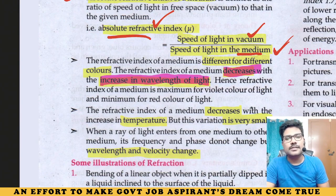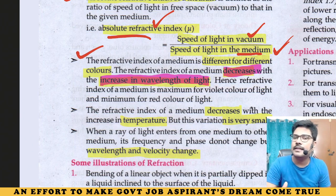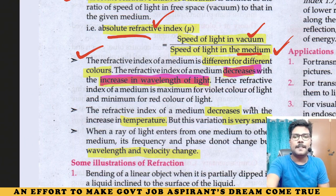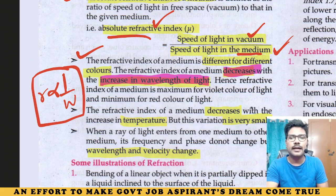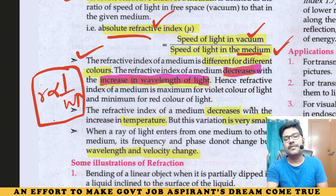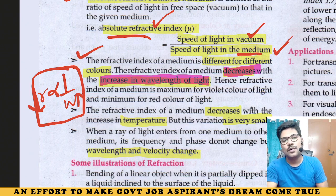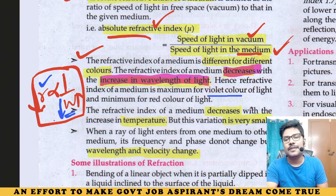Refractive index of a medium is different for different colors. Refractive index is inversely proportional to wavelength. When wavelength increases, refractive index decreases. Violet has minimum wavelength, therefore violet has maximum refractive index.